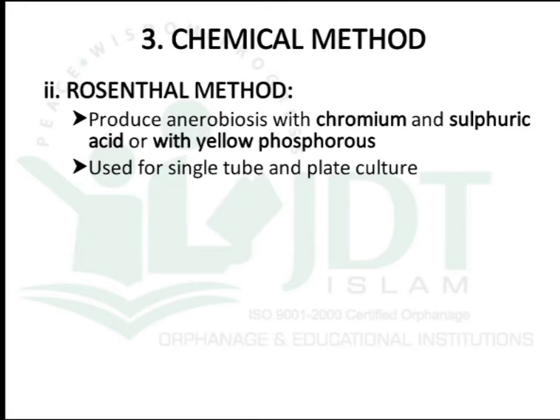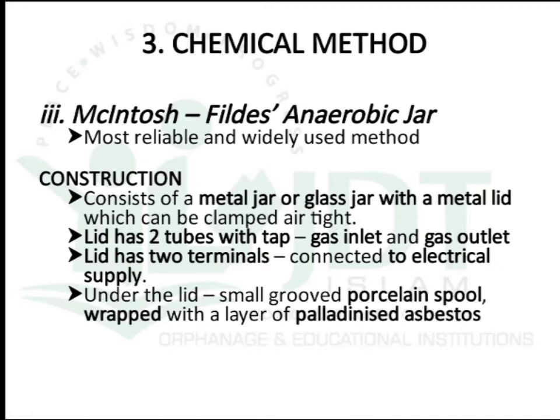The second chemical sub-method is the Rose-Sandar method, in which chromium and sulfuric acid, or chromium with yellow phosphorus, are used. This is also used for single tube or plate culture of anaerobic microorganisms. The third and most important method is the McIntosh field anaerobic jar, which is the most reliable and widely used method. We will discuss the construction, working, and advantages and disadvantages of the McIntosh field jar.